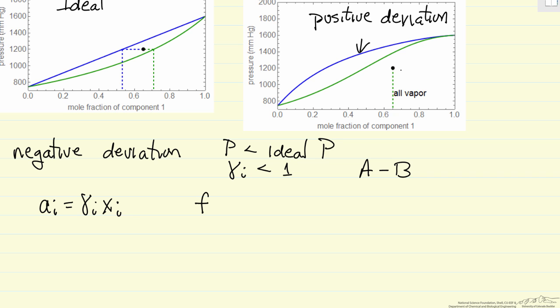Also, when we look at fugacities, the fugacity in a solution, so the hat indicates solution, the liquid phase, it's the mole fraction times the activity coefficient times the pure component fugacity. So this is the pure component fugacity.